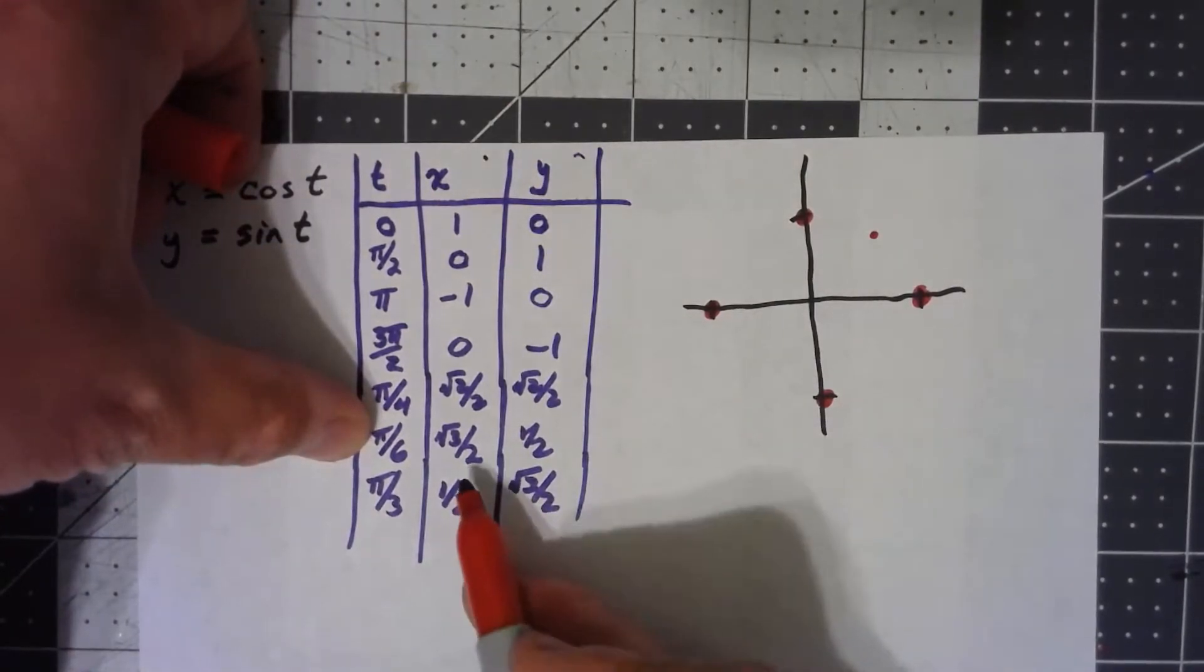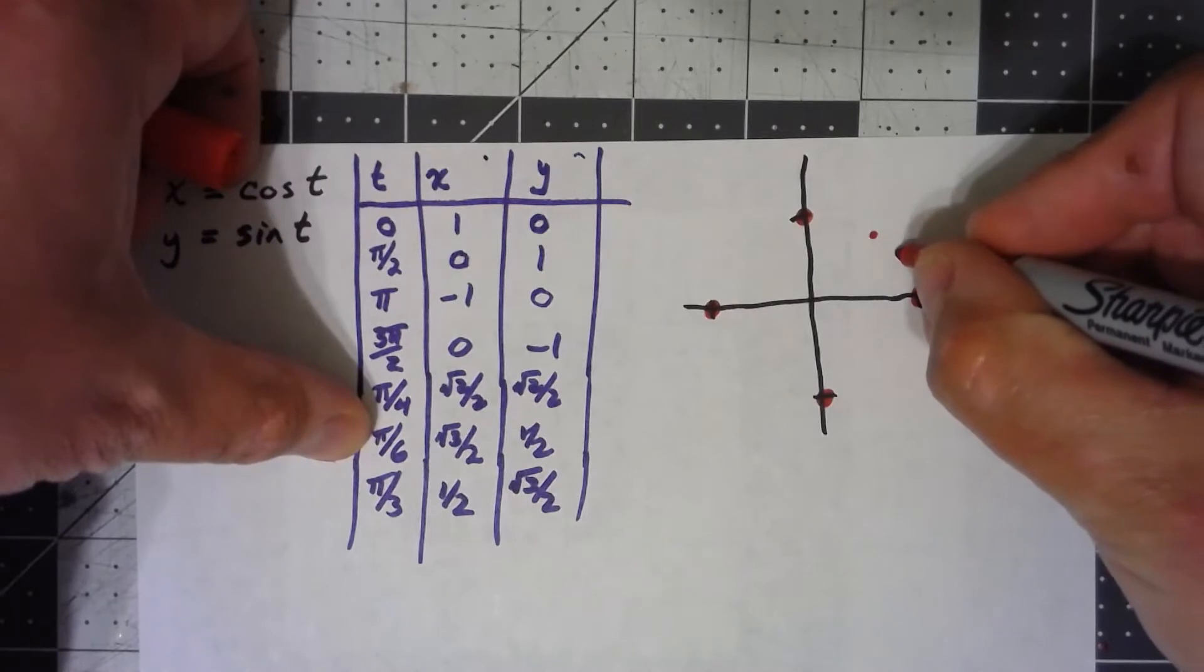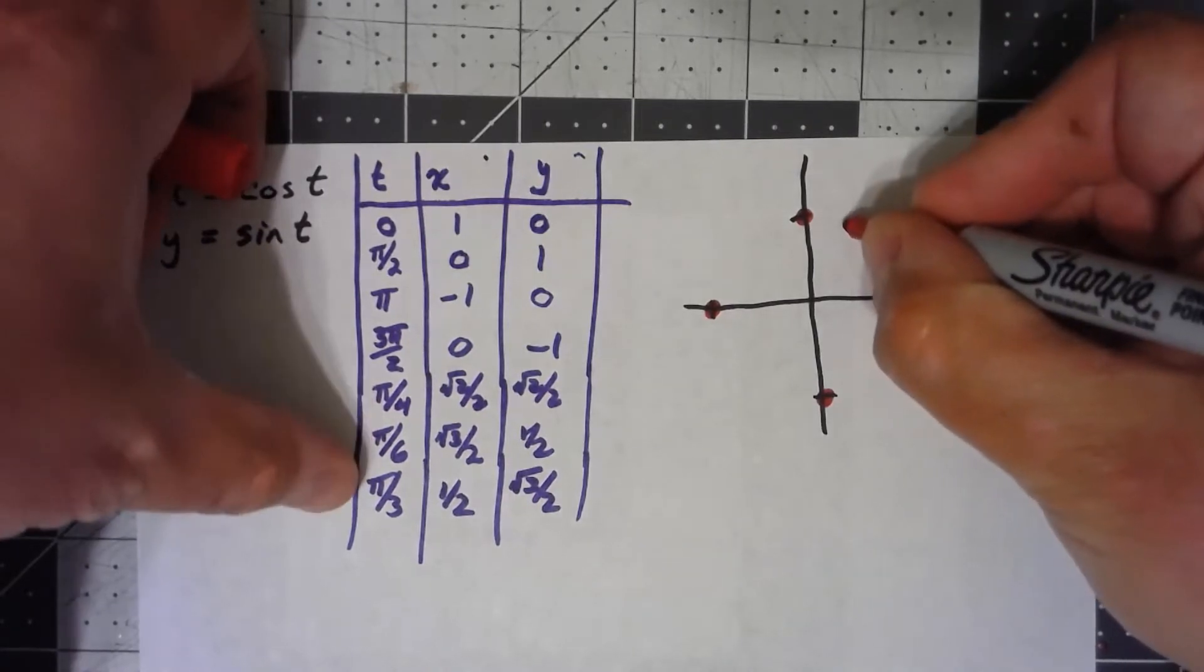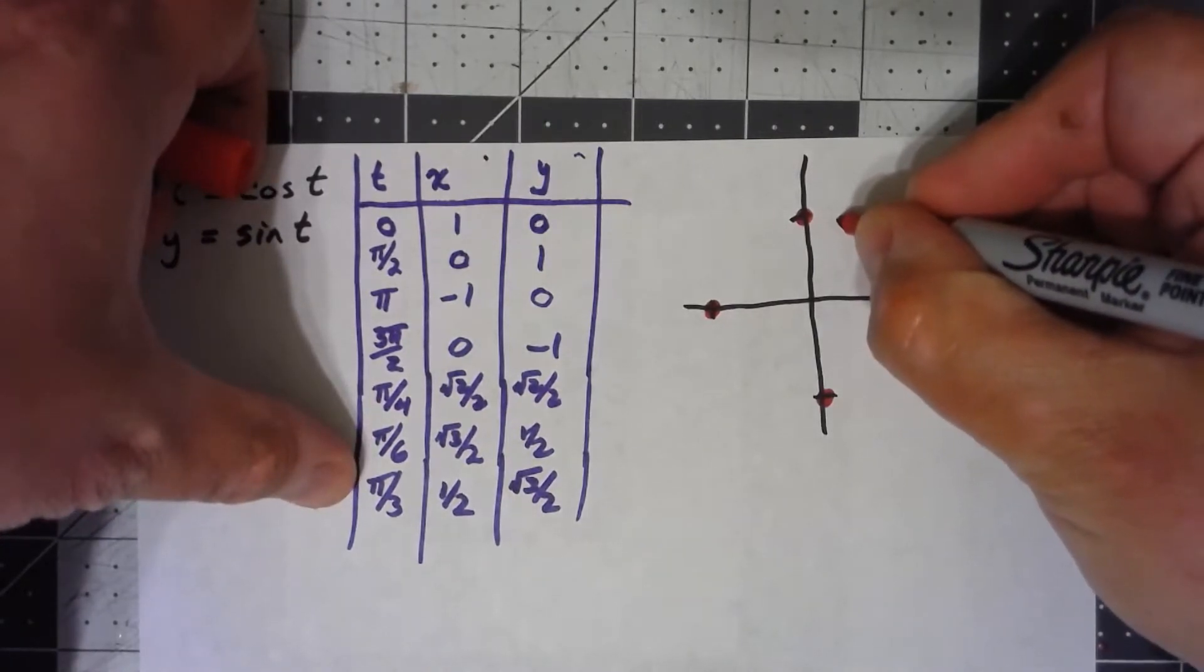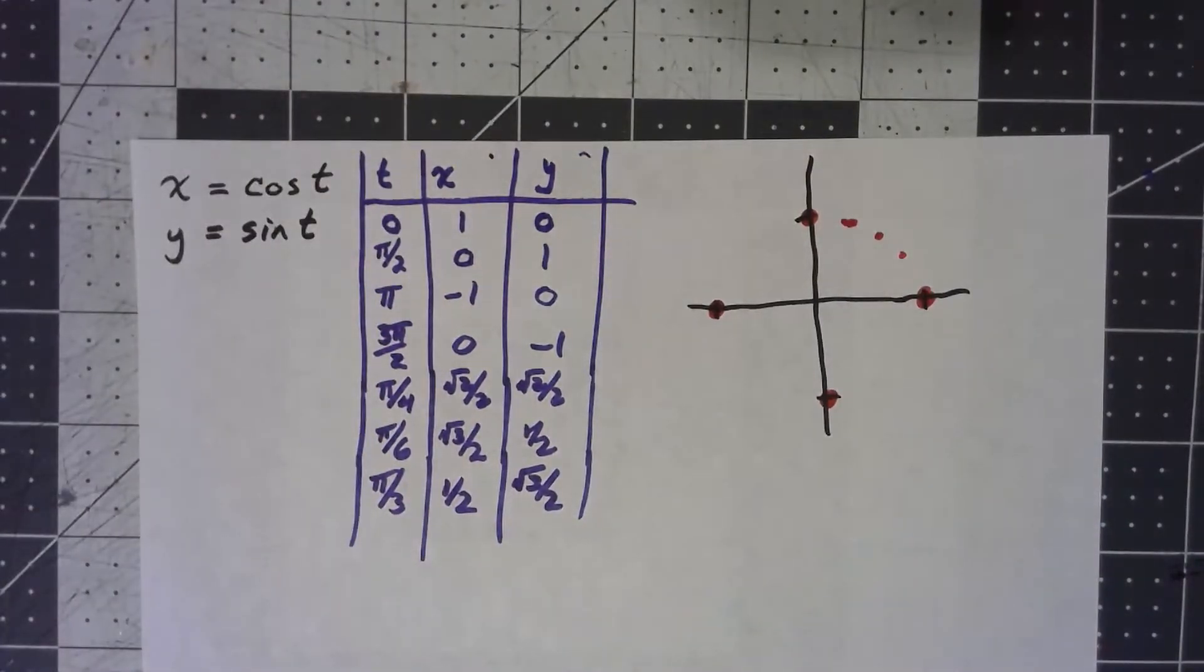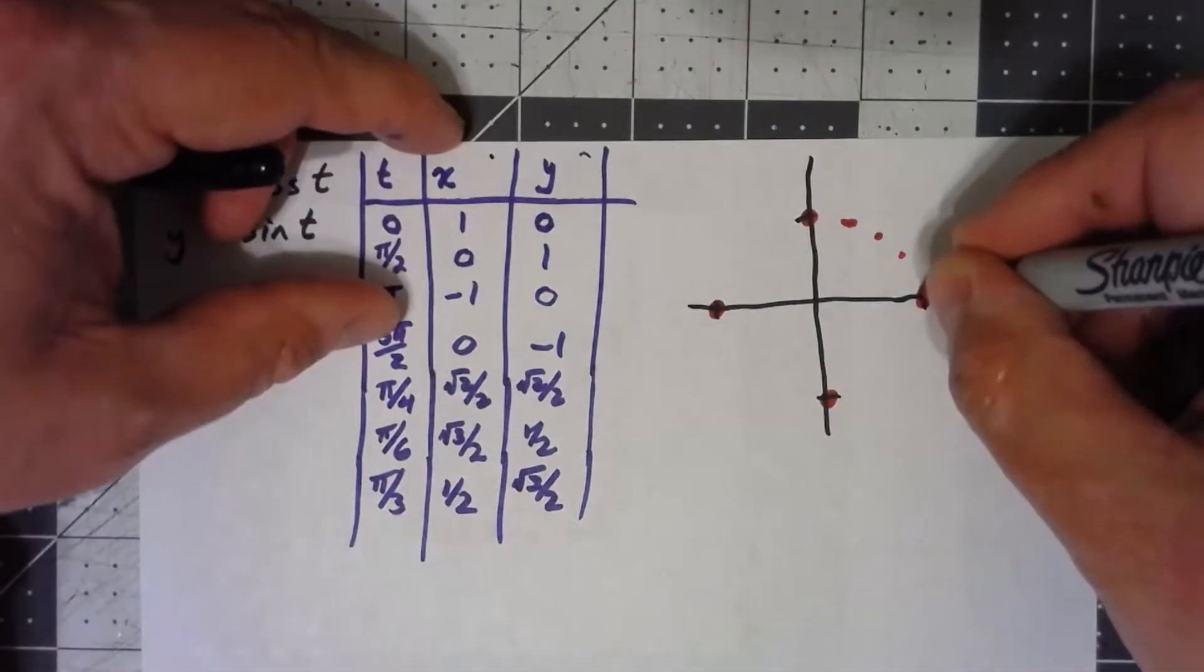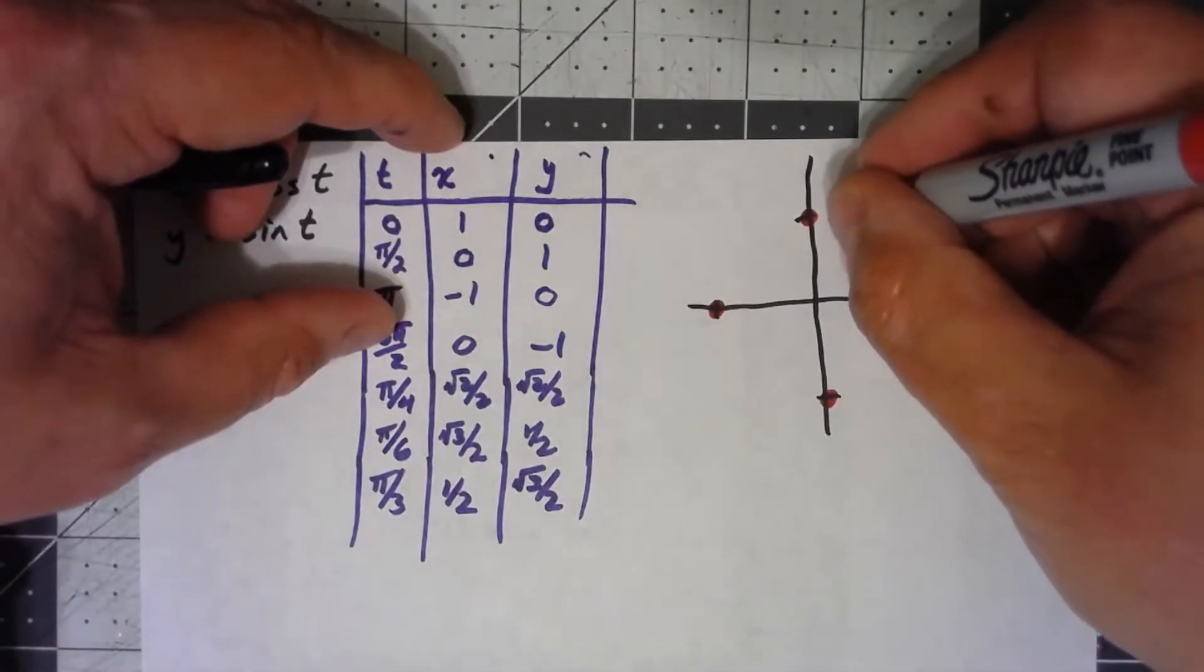Pi over 6 is about 0.85, 1 half, somewhere around right there. Similarly, this is somewhere around maybe right there. And certainly we could put in more points, but I think you start to see that we're getting a circle here.